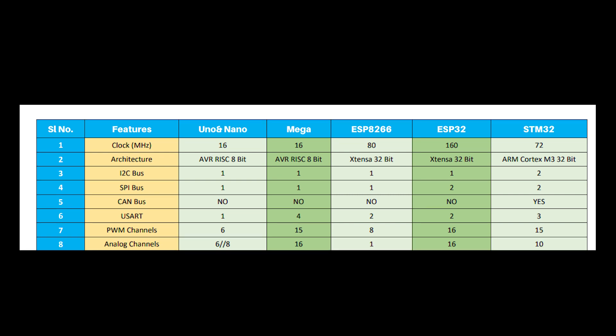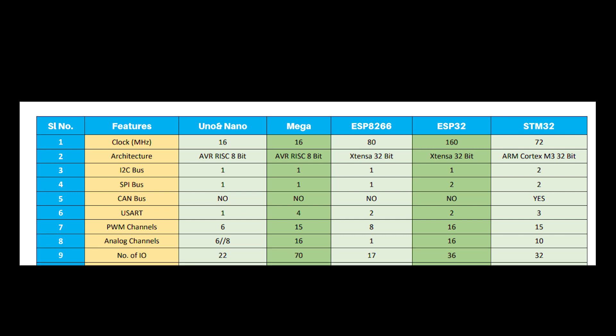For taking data from analog output-type sensors we need analog input channels. Uno has 6 and Nano has 8 analog input channels. Mega and ESP32 have 16 analog input channels. ESP8266 has only a single analog input channel, and STM32 has 10 analog input channels.